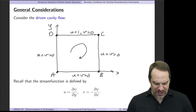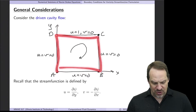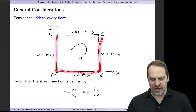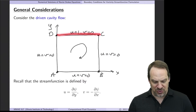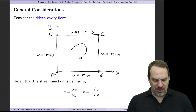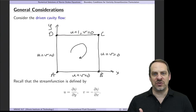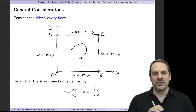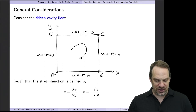Let's look at a specific flow: the driven cavity flow. We have the x and y coordinates, it's 2D, and we have a rectangular domain where the left, the bottom, and the right sides are not moving, so u and v are zero on each of those three sides. The top is moving to the right with a velocity of 1, so it's a driven cavity — the flow in the cavity is being driven by the movement of this upper surface. This is a very typical problem for testing CFD codes: simple geometry, no inlets or outlets. People have been doing this for years and there are lots of good results in the literature for this particular driven cavity problem.